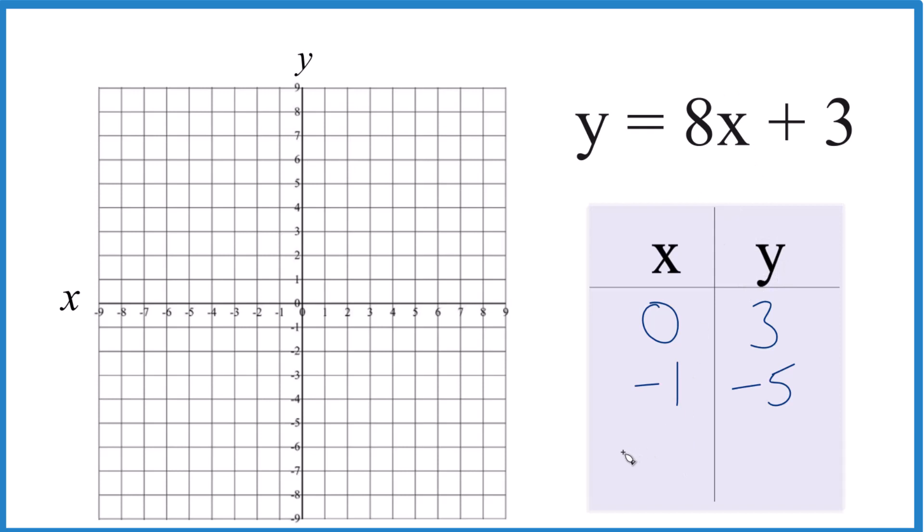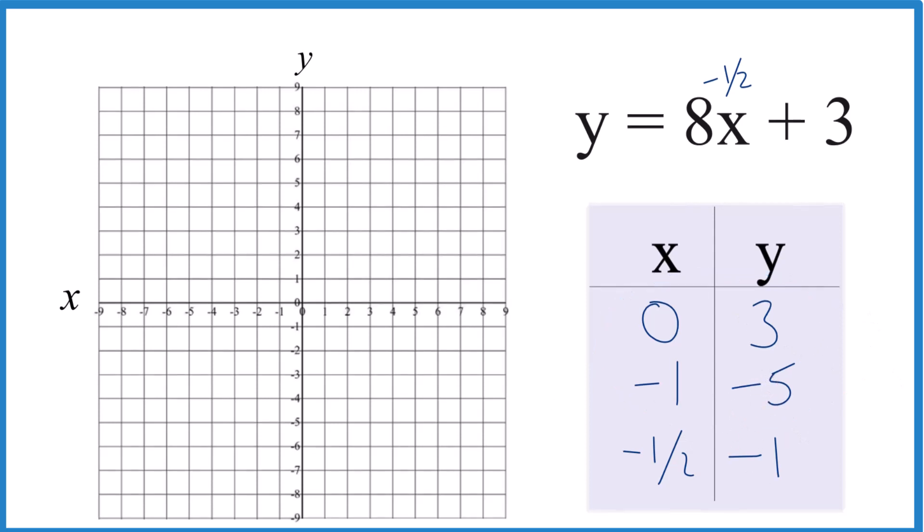We can do that. So I put negative 1 half for x, so 8 times negative 1 half would be just negative 4. Half of 8 is 4, but we have the negative. So negative 4 plus 3 is negative 1, and we could do it with just two points. That would work, but I like having a third point. So let's try it.